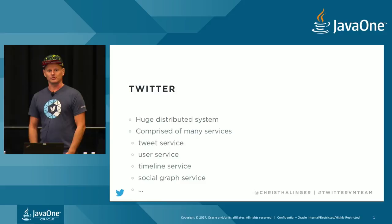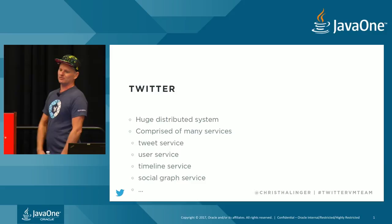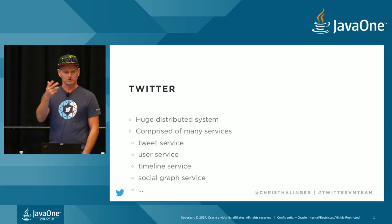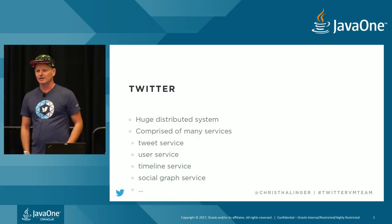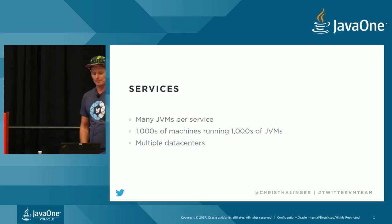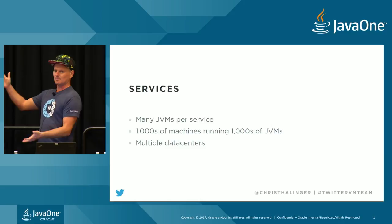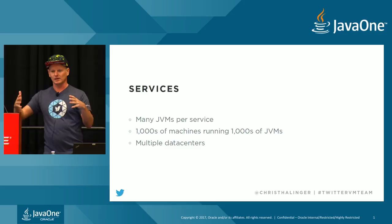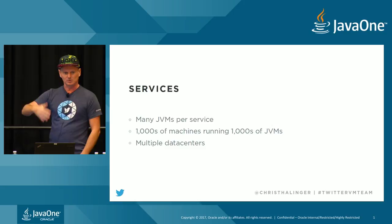Twitter is a huge distributed system. We have many, many services — I don't even know how many. But there are some main ones like the tweet service that reads and writes tweets, the user service that shows profile data, the timeline service that provides your timeline on your client app, and social graph — all important services. We run many instances of them, thousands of JVMs per service, and we have thousands of machines running thousands of JVMs across multiple data centers. Every tiny bit of saving multiplies thousandfold.